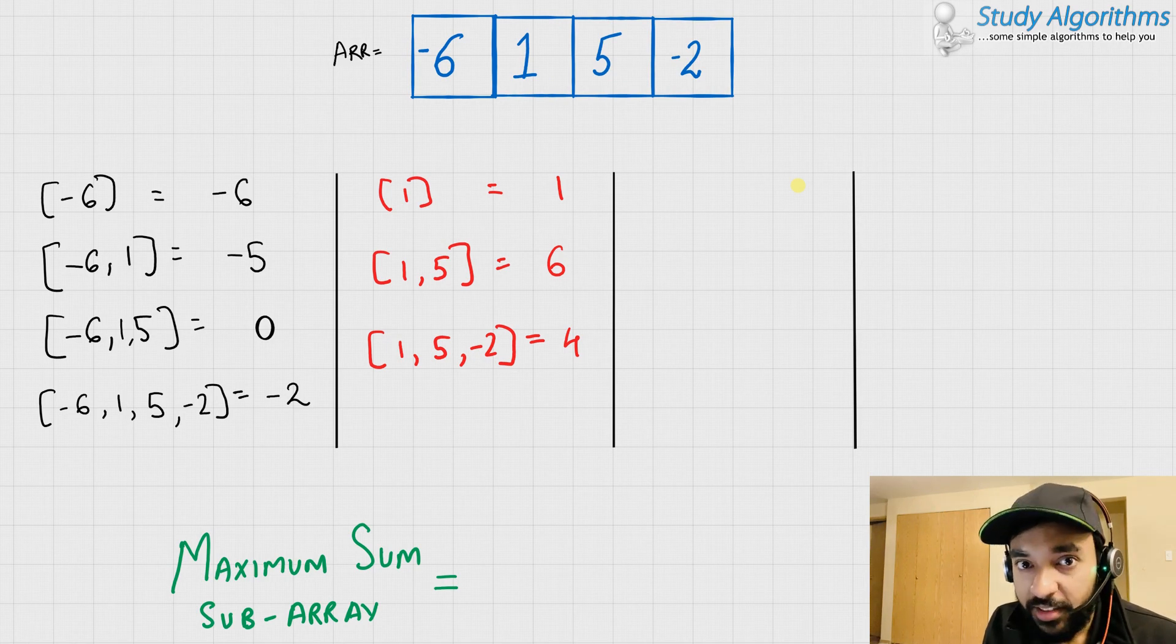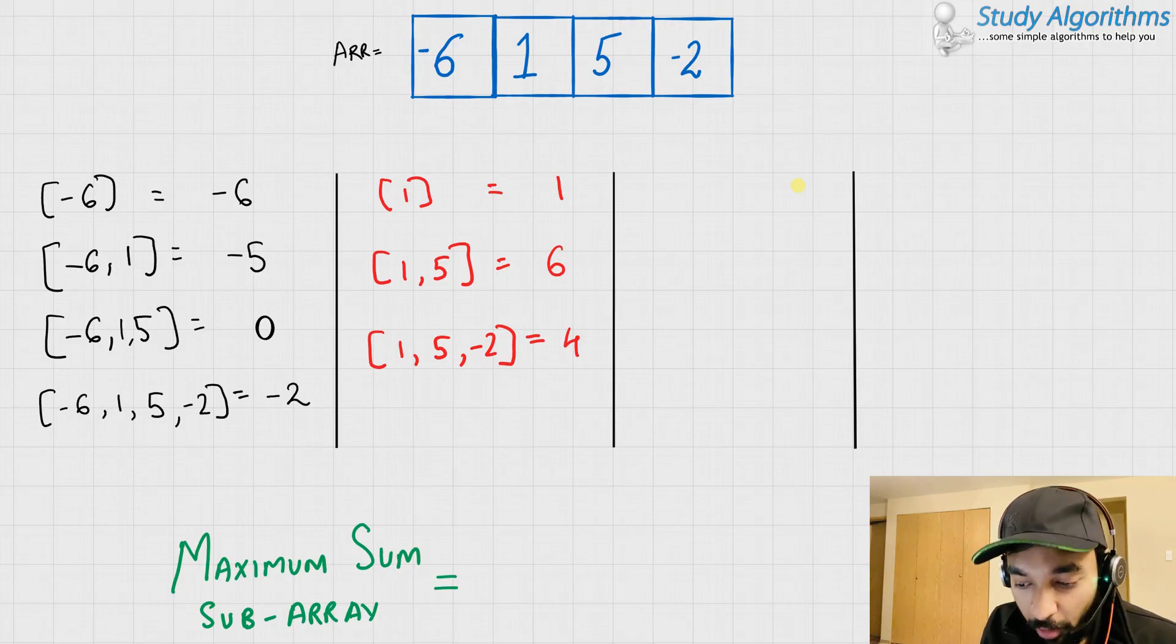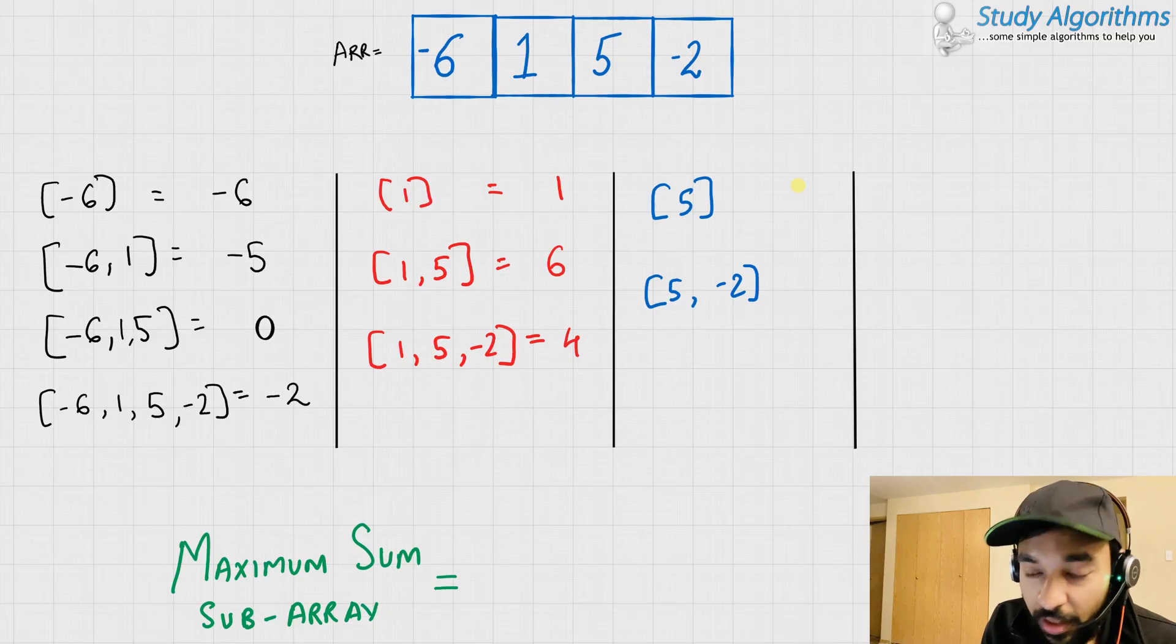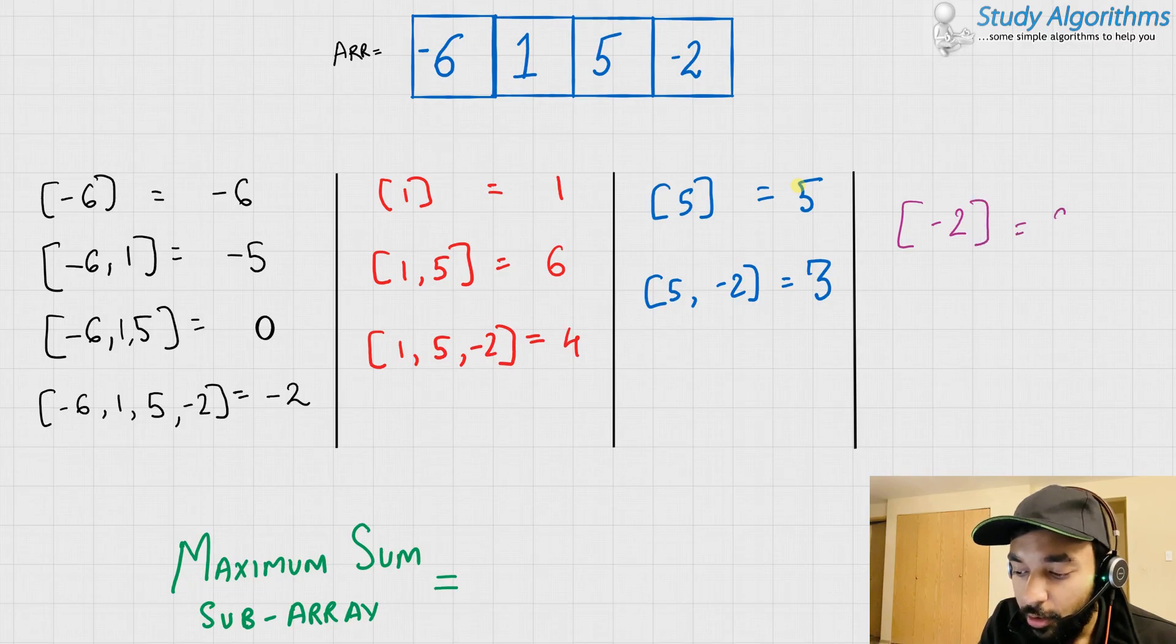So, we got a new sum maximum subarray and that looks like 1, 5. But wait, we need to keep looking forward. Starting off with 5 and then evaluating its sums. And last but not the least, we have the element minus 2 and its sum would be 2.